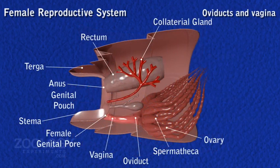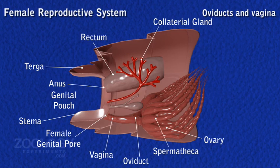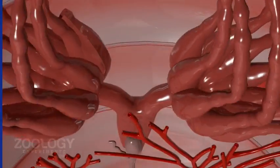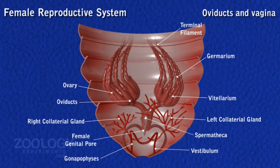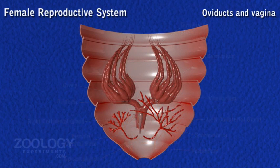Posteriorly, all the tubules of an ovary unite to form a short and wide lateral oviduct. The two lateral oviducts in turn unite in the seventh segment to form a very short median common oviduct. Its posterior part is called the vagina, which is formed as an invagination of the body wall. It opens into a large genital pouch by a vertical slit-like female genital pore on the eighth sternum.